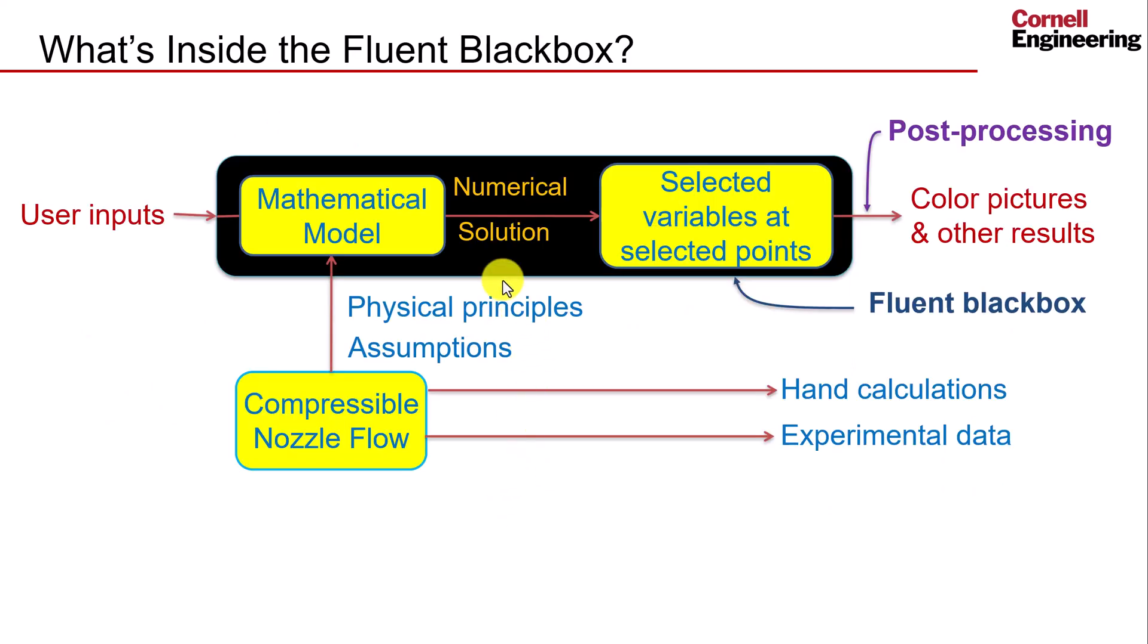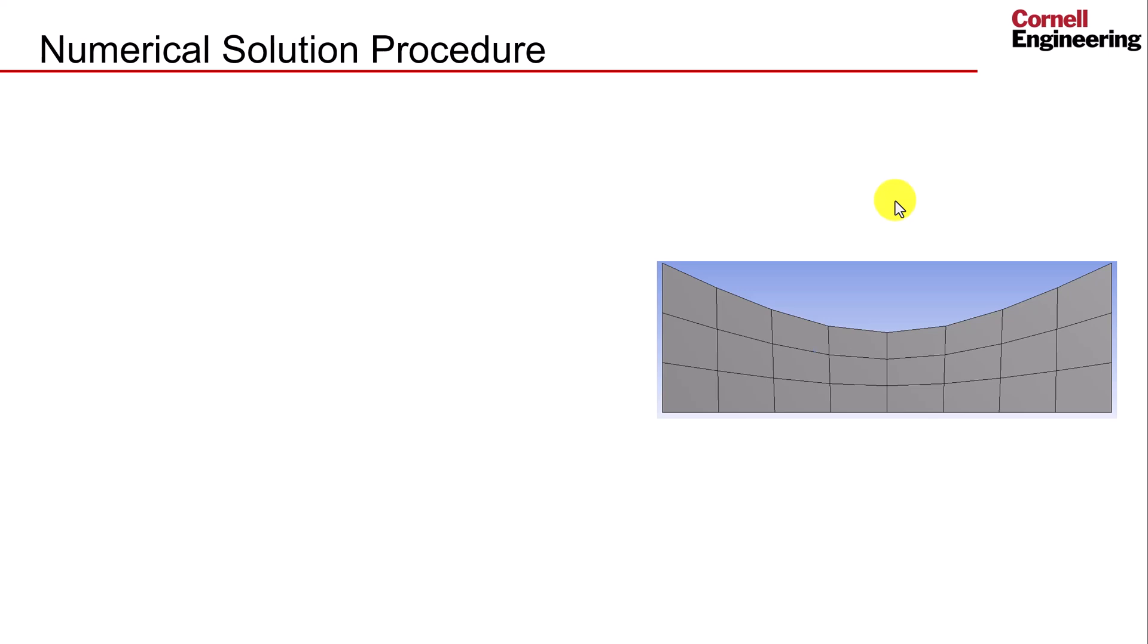This completes our overview of the mathematical model. So we can now take a look at a brief overview of the numerical solution strategy that will be used to obtain values of our unknown functions in the domain. To begin this process, we need to divide the domain up into multiple control volumes, called cells.